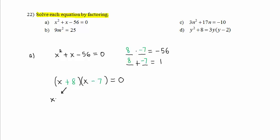Setting x plus 8 equal to 0 and subtracting 8 from both sides, we get x equals negative 8 as one solution. Writing x minus 7 equal to 0 and adding 7 to both sides, we get x equals 7, our second solution.